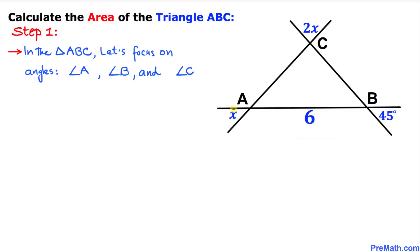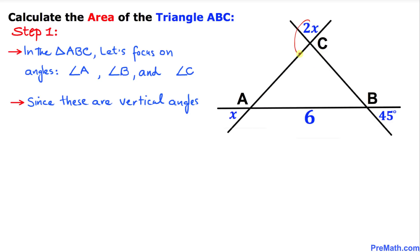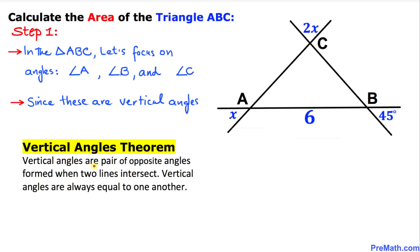Let's get started with our solution. Let's focus on triangle ABC — we have three angles: angle A, angle B, and angle C. We know that certain pairs of these angles are vertical angles. The vertical angle theorem states that vertical angles are a pair of opposite angles formed when two lines intersect, and they are always equal to one another. So this angle equals this angle, and likewise this angle equals this angle.